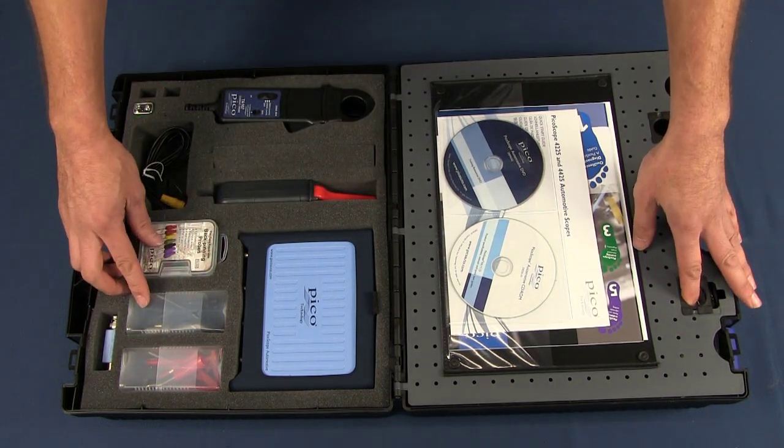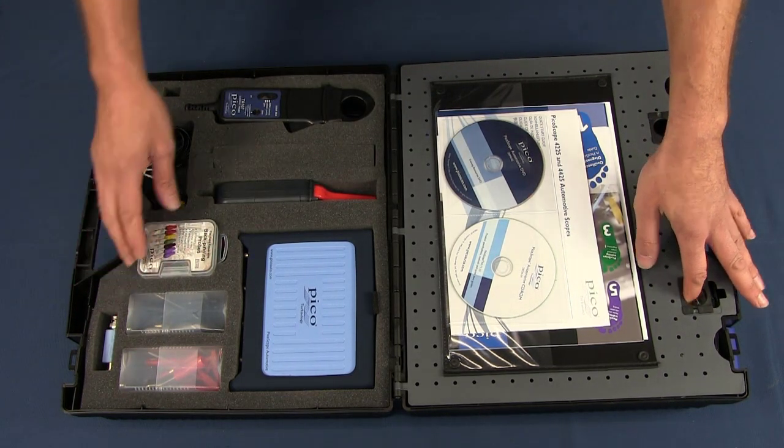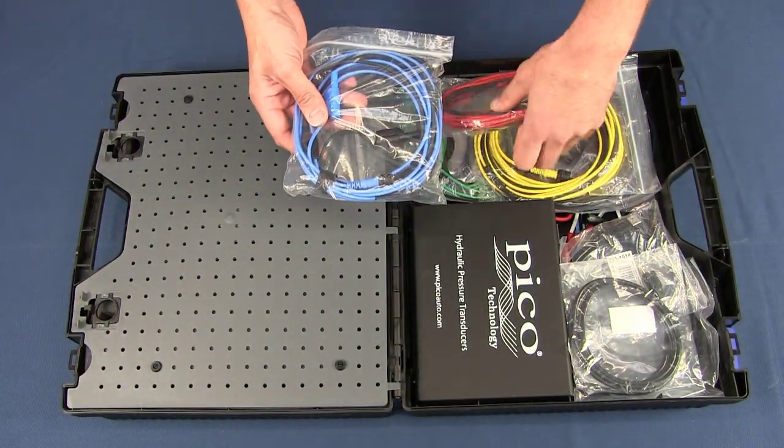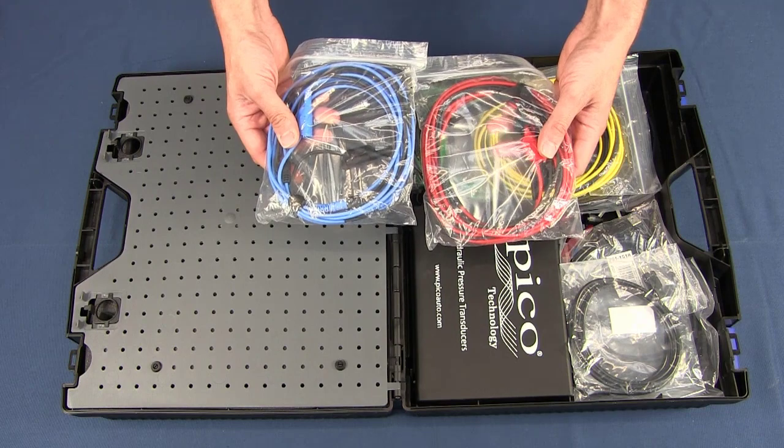The standard test leads and back probes are also included in the kit. The test leads themselves are actually five meters in length, which is great for working on some of the larger machinery.